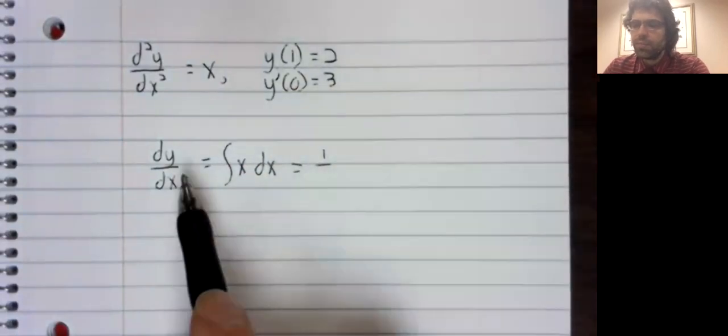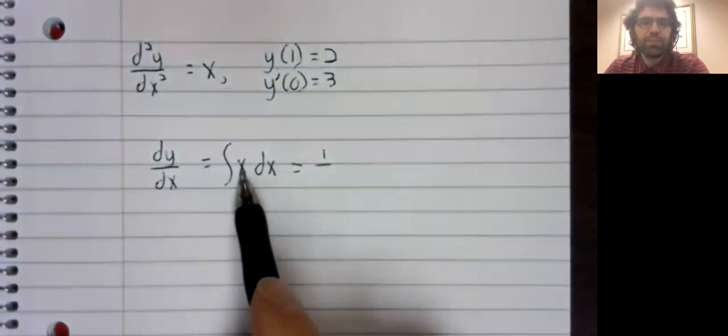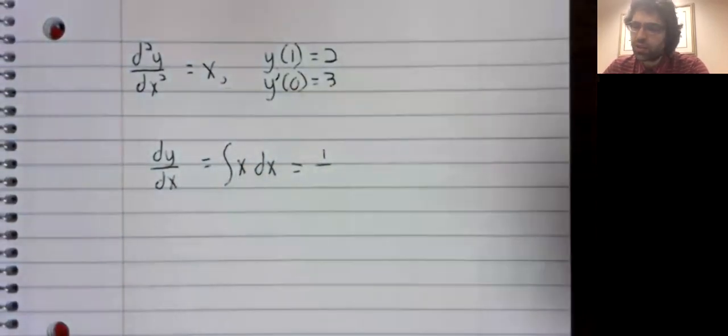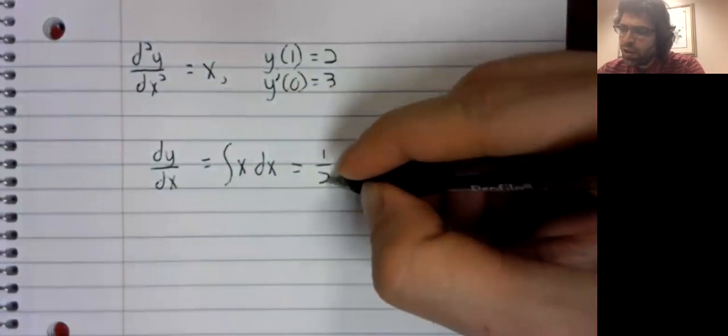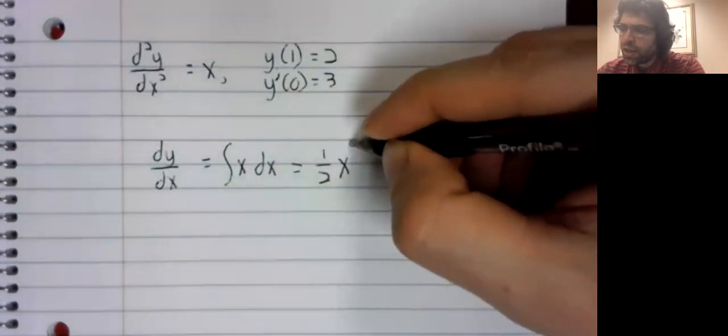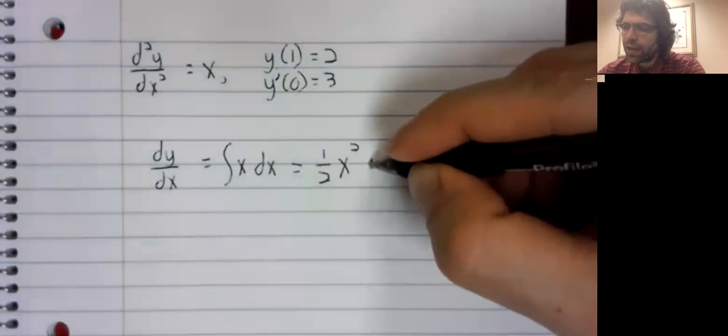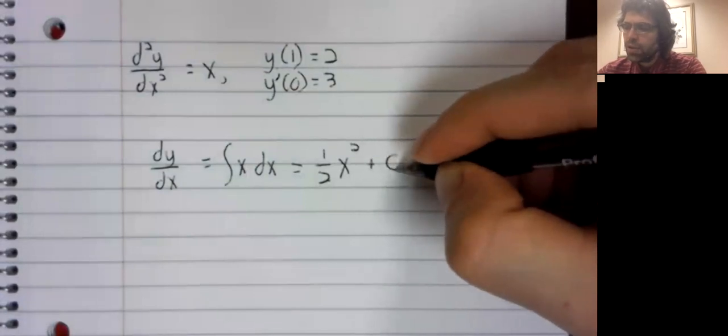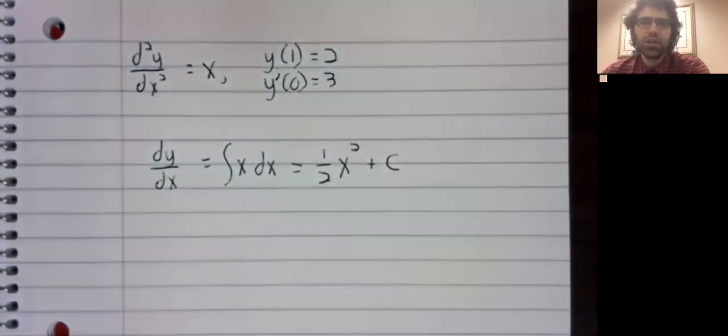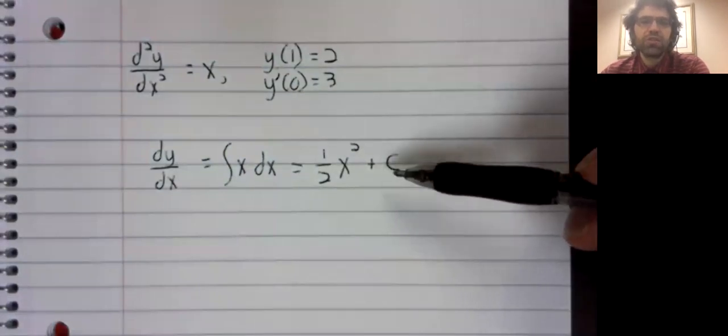And this has as its antiderivative, one half x squared, plus a constant.